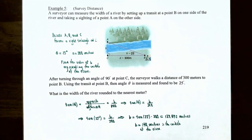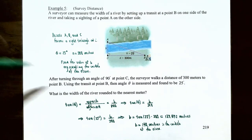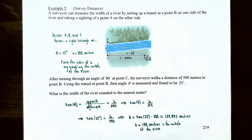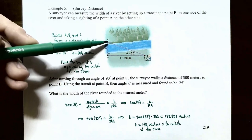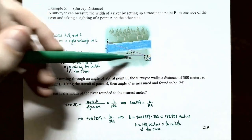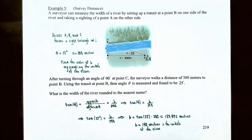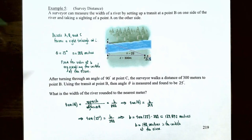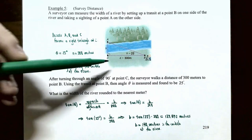In example five — a survey distance problem — a surveyor measures the width of a river by setting up a transit at point C on one side of the river and sighting point A on the other side. After turning 90 degrees, the surveyor walks 300 meters to point B, where the angle θ is measured to be 25 degrees. Points A, B, and C form a right triangle at point C, with angle C being the right angle, θ = 25 degrees, and side A = 300 meters.